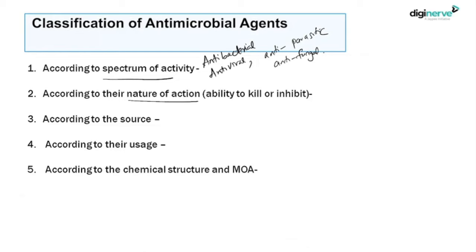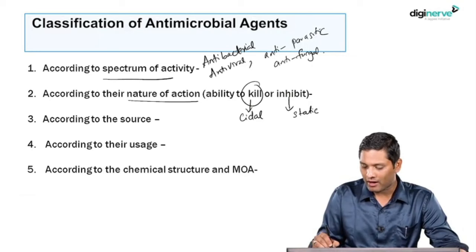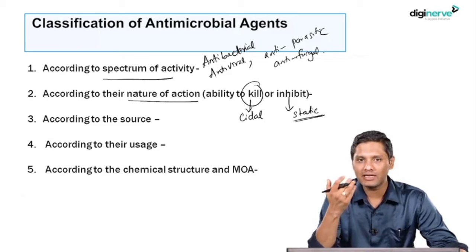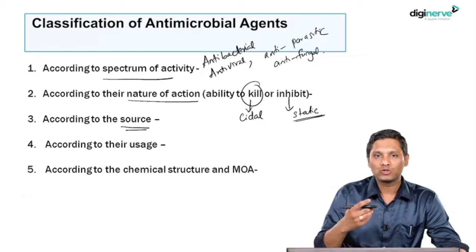They can also be classified based upon the nature of action — whether they will kill or inhibit the microorganism. Not all antimicrobial agents kill; some may just inhibit. If they kill, those agents are called 'cidal' — for example, bactericidal, virucidal, fungicidal. If they are inhibiting, those agents are named with the suffix 'static' — for example, bacteriostatic.